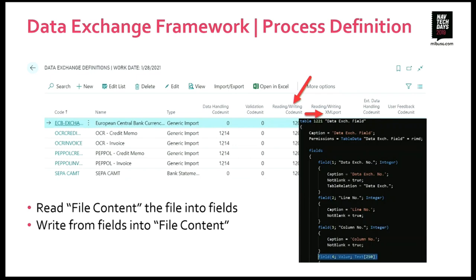The third step is to actually read the content of that file. That content is being read into fields in a table called 'data exchange fields', utilizing the column and line definitions. The other way around, if we are exporting, this is where we take the data from those fields and create a document layout — an XML layout, for example, using an XML port. The error pointing between the code unit and the XML port is because it's always the code unit that executes — there is a code unit that actually executes that XML port, so you are never using both of them; it's either/or. The value in the fields table is currently 250 characters, which can be an issue. In version 14, they added a value blob as well, with set-value and get-value functions — if the value is too big for the text field, it will be stored in the blob.